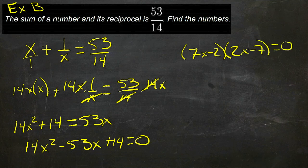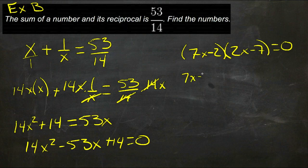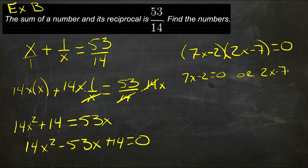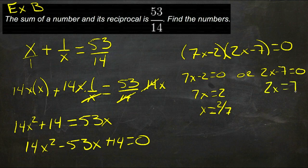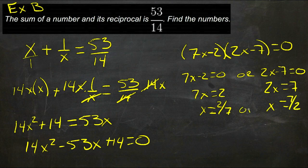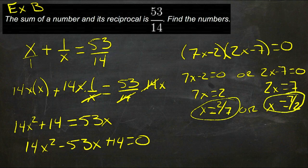And then we'll solve this with the zero product rule, we'll really have two equations. 7x minus 2 equals 0, or 2x minus 7 equals 0. So we get 7x equals 2, and x equals 2/7, so that's one of our answers. And then the other side we get 2x equals 7, so x equals 7/2, and that's our other answer. So x is 2/7, or x is 7/2.